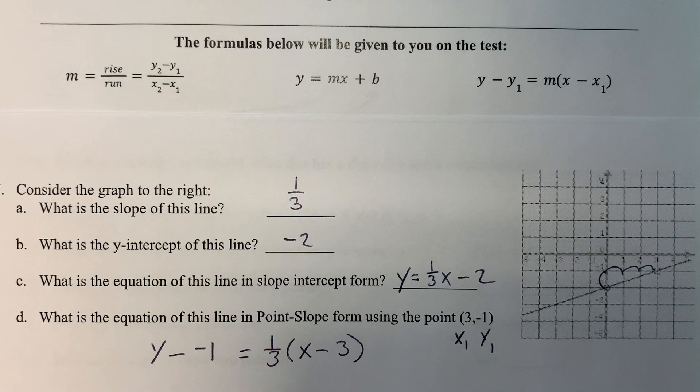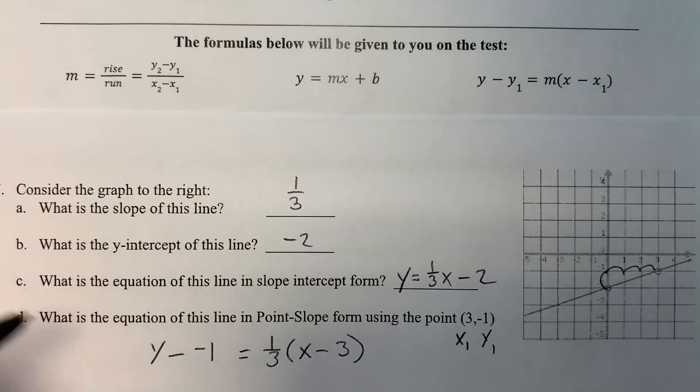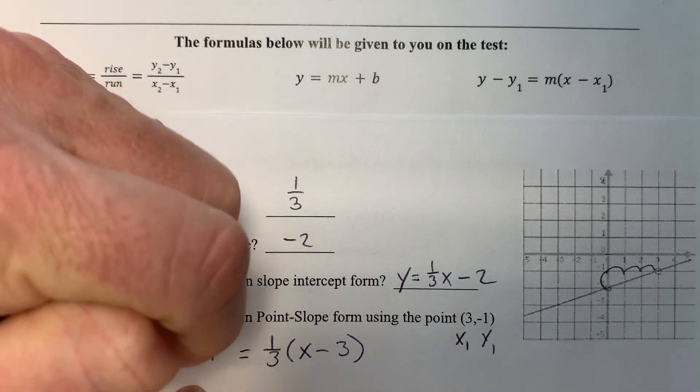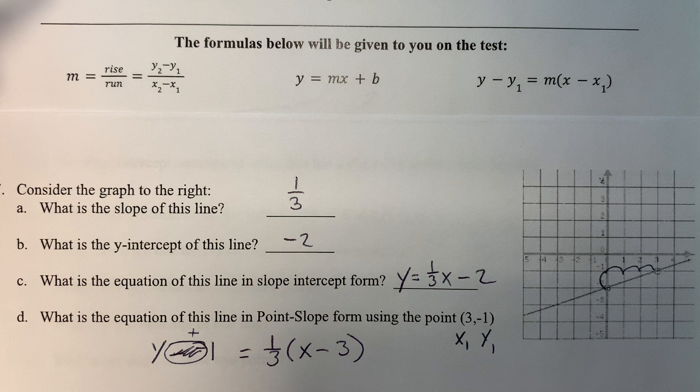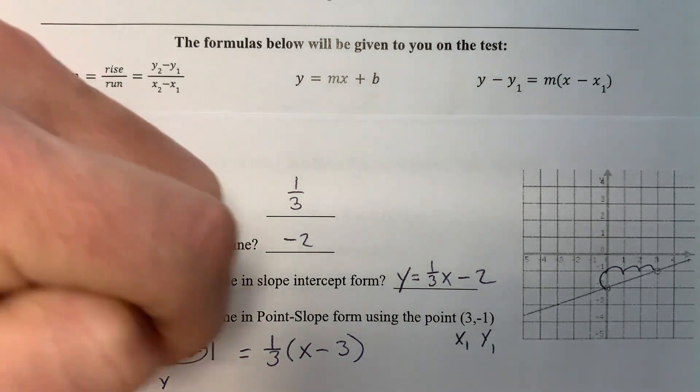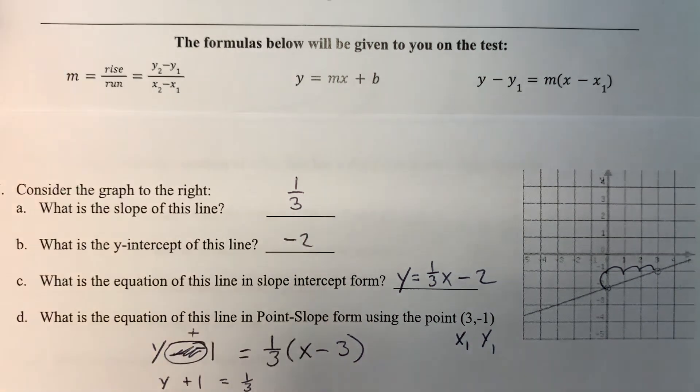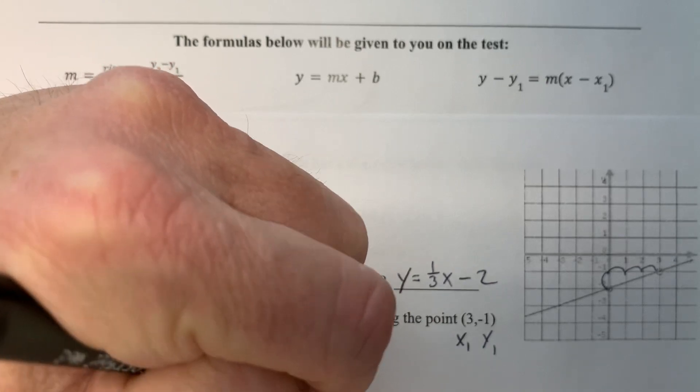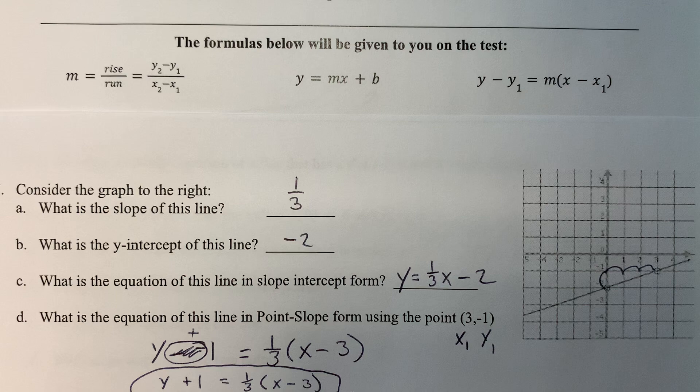next to each other can turn into a plus, so for our final answer we will write y plus one equals one-third x minus three. That'll just be a nicer way of writing it, and we have finished problem number seven. Well done!